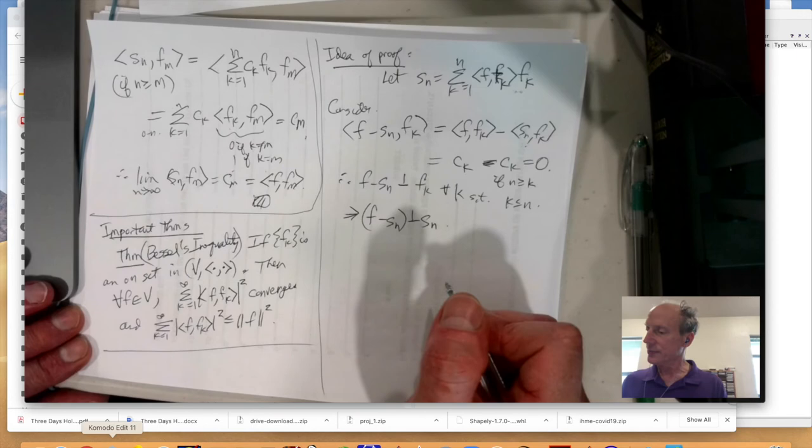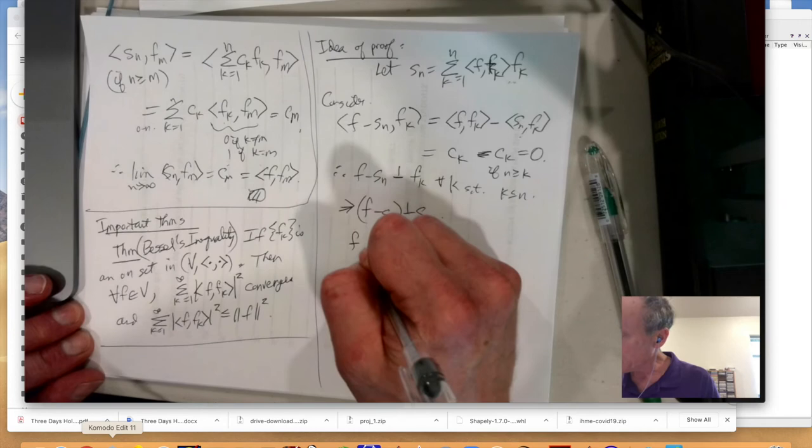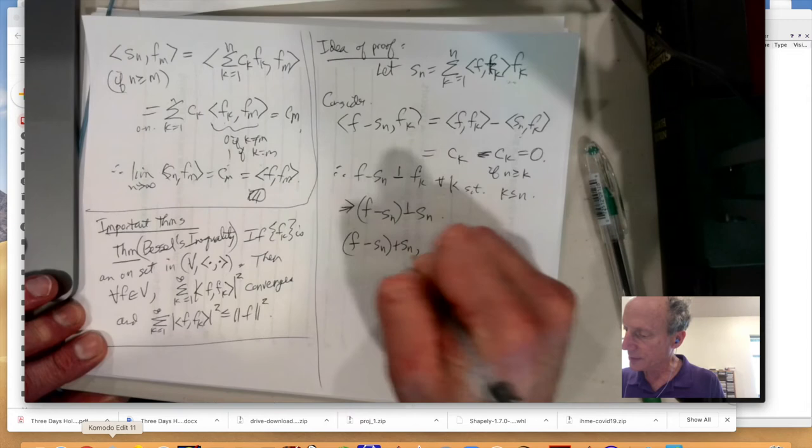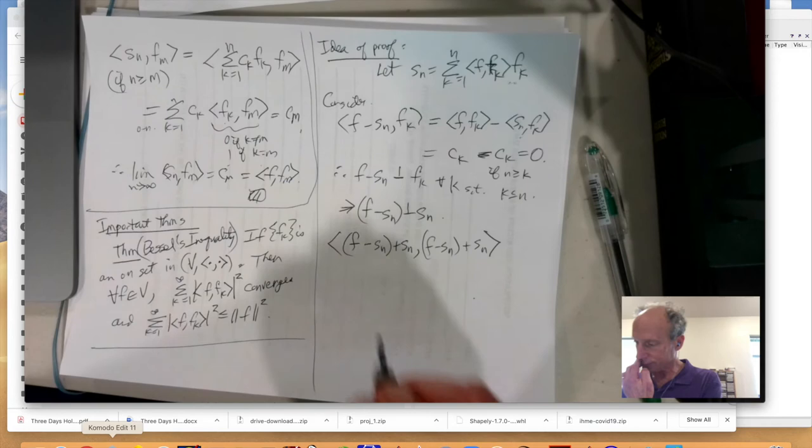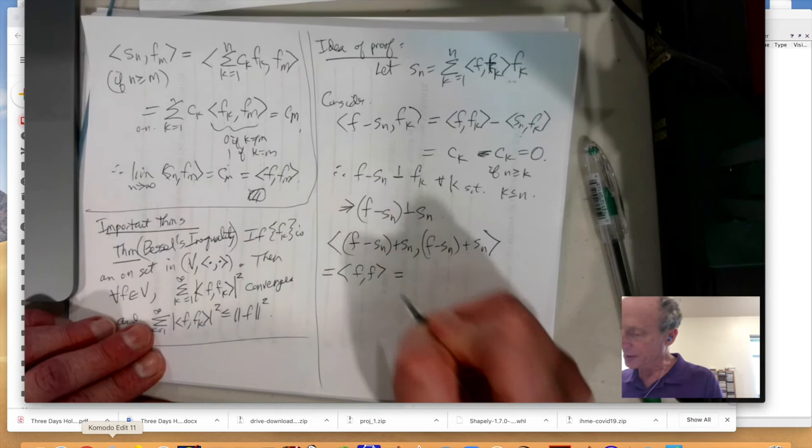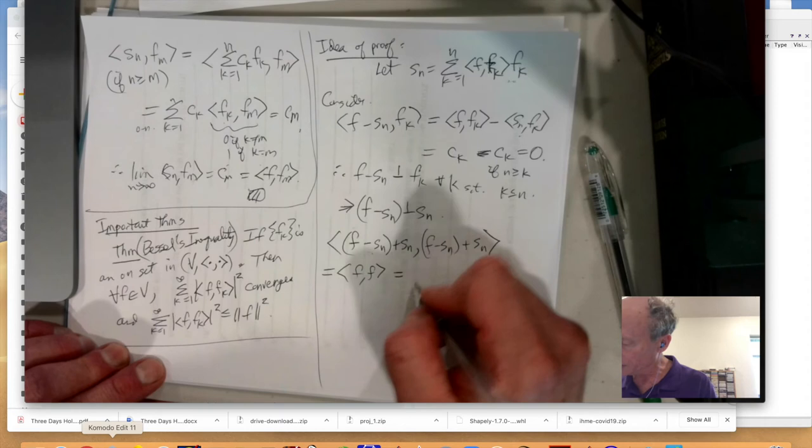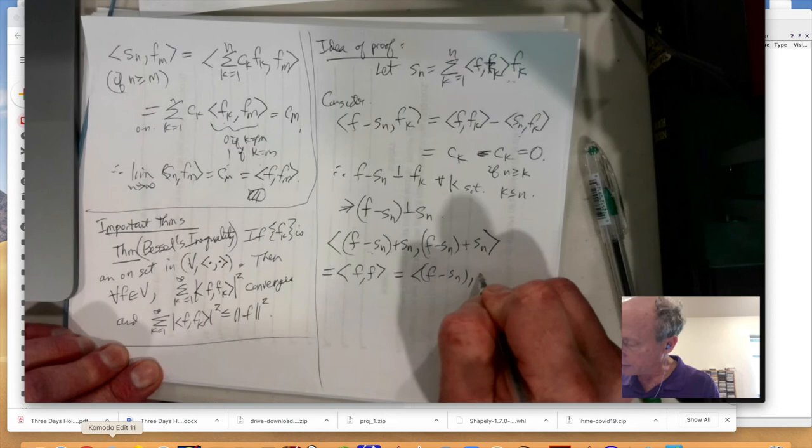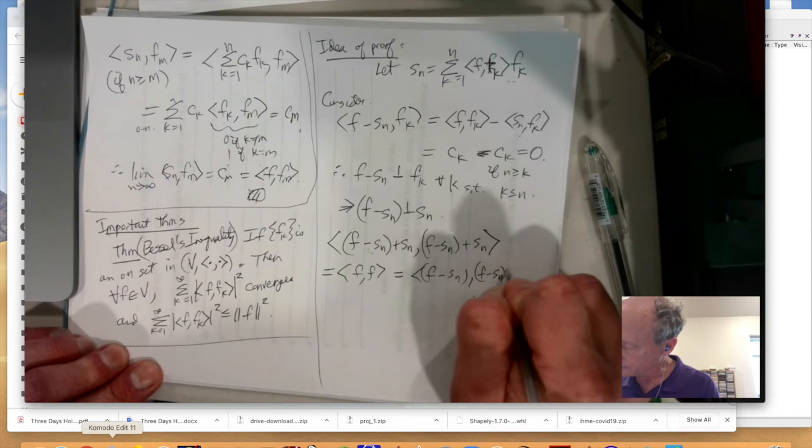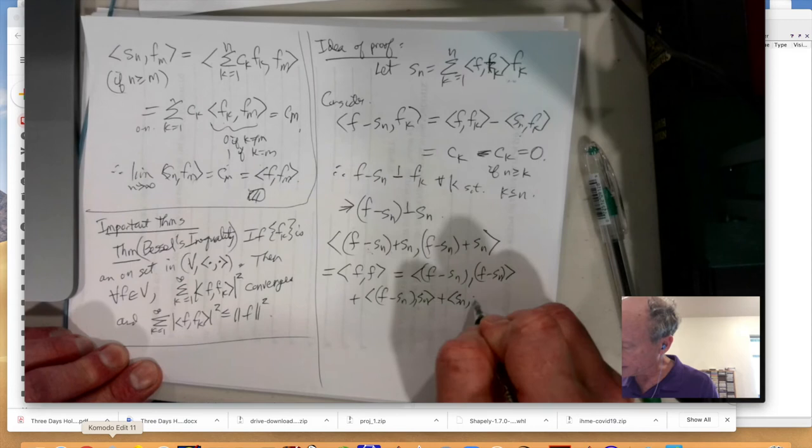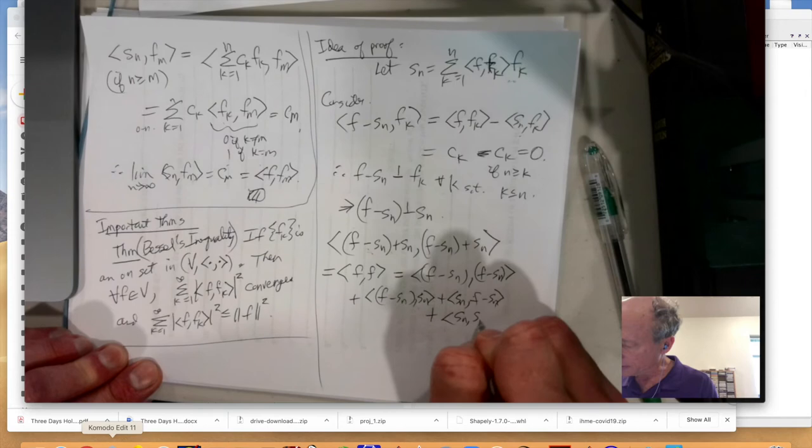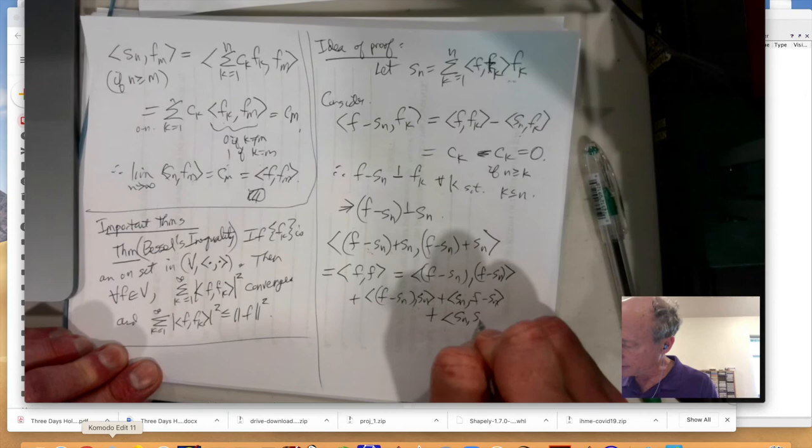So then, that means we can actually do a computation of F minus Sn plus Sn in a product with F minus Sn. And notice this is the same thing as F with itself. But then, if you put this in here, let's see, we're going to get, using that grouping, we're going to have the inner product of F minus Sn with itself, plus F minus Sn with Sn, then plus one the other way around, and then plus Sn with itself.